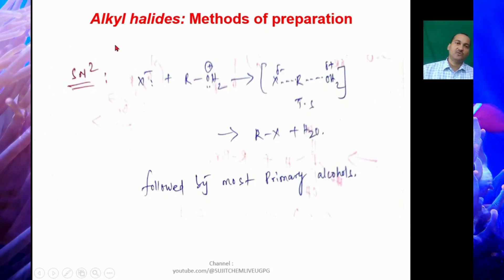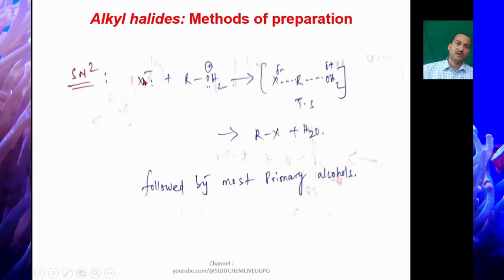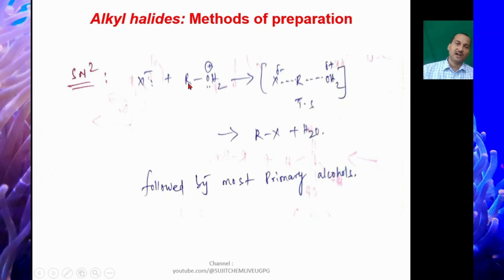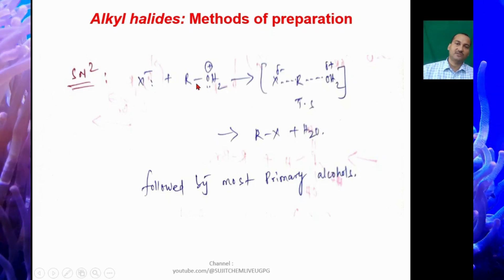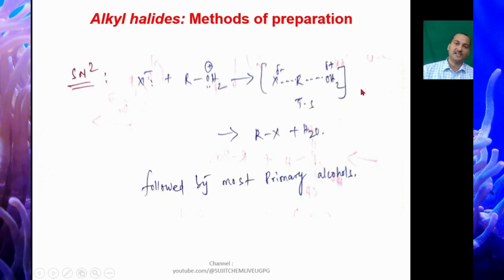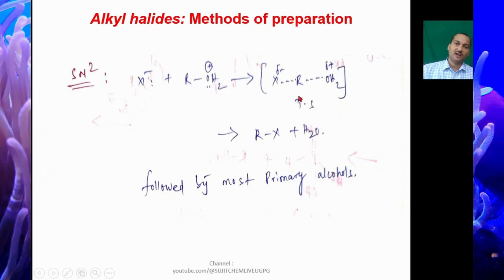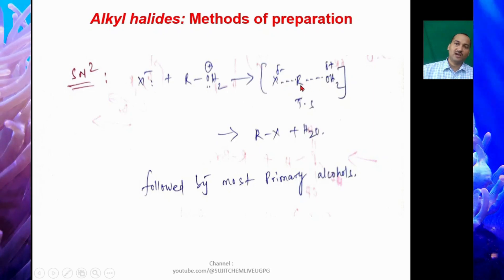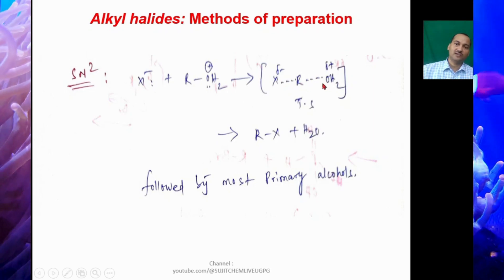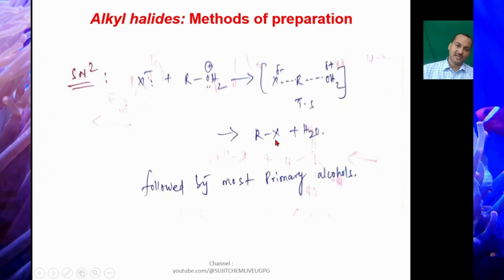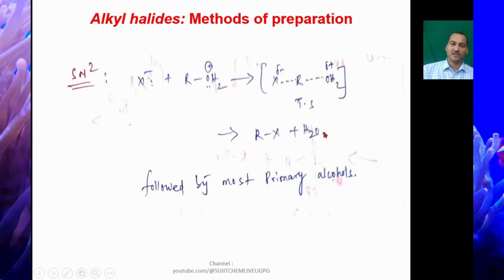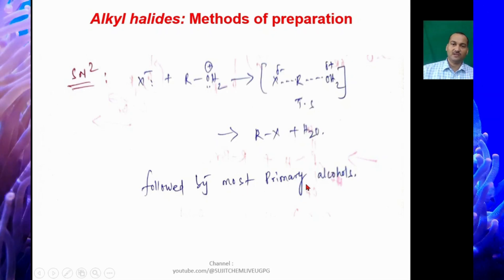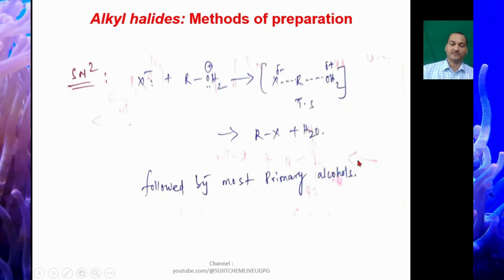The SN2 mechanism: the free halide X− attacks from the backside of R in ROH2+. A transition state forms in which the X–R bond is forming while the R–O bond is breaking, giving RX plus water. This is followed mostly by primary alcohols.